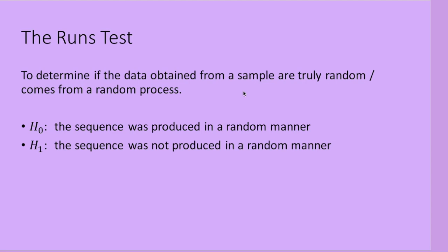The null hypothesis for the RUNS test is always that the sequence is random, and the alternative is always that the sequence is not random.